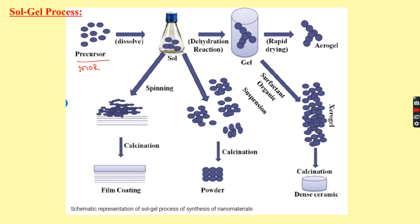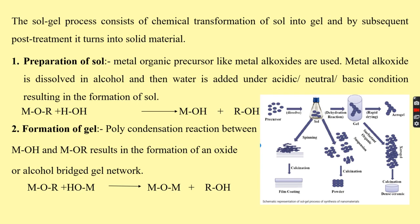Metal alkoxide is dissolved in alcohol, and then water is added under acidic, neutral, or basic conditions. Addition of water leads to hydrolysis, in which the alkoxide ligand is replaced by a hydroxide ligand. This results in the formation of a metal hydroxide or alcohol sol.